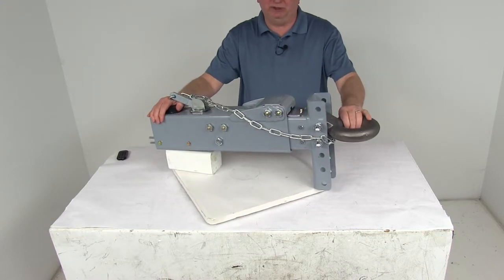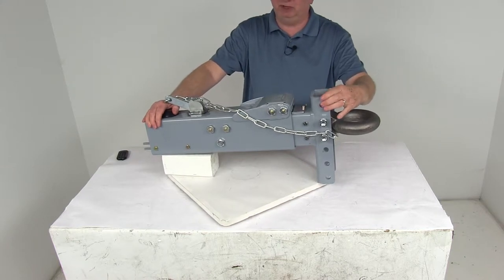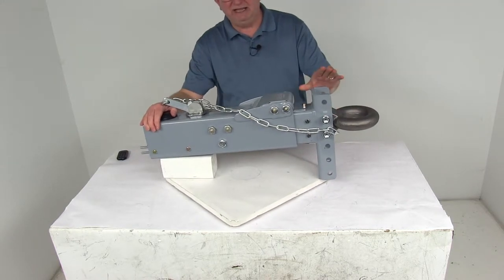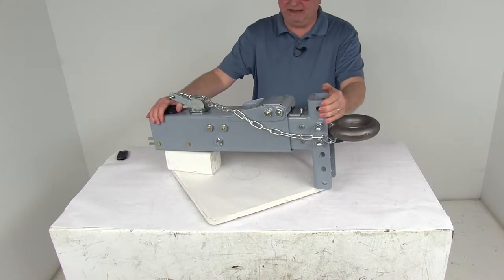This one comes with a lunette ring. This will couple to a pintle hitch. The adjustable channel can also be used with almost any type of coupler including a standard ball coupler or clevis attachment to fit your specific application.